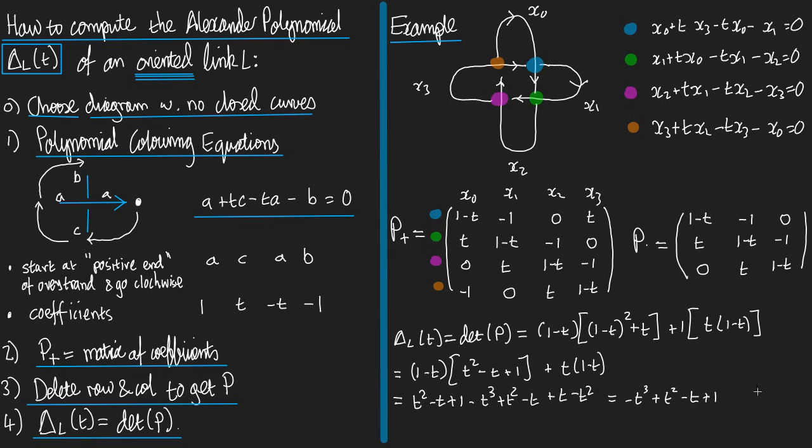Let's see. It looks like nothing happened. Brilliant. So that's the Alexander polynomial of this oriented link.